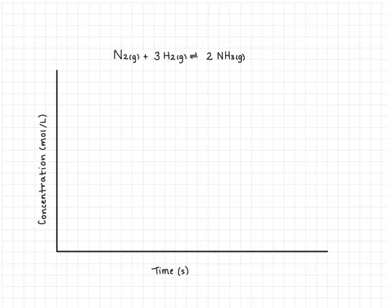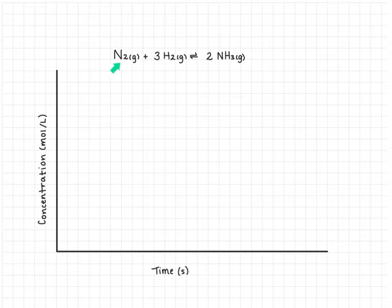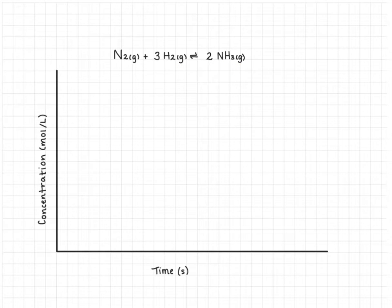We're going to examine the establishment of equilibrium on a graph for a very common equilibrium process we'll study: the Haber process. In the Haber process, one mole of nitrogen gas and three moles of hydrogen gas are in equilibrium with two moles of ammonia gas.